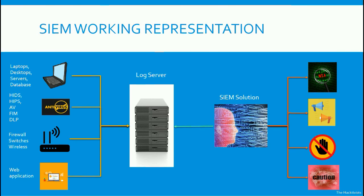The SIEM software reads through all the logs in the log server to give a particular output. You can query and search for a particular event or a sequence of events. You can create alerts using correlation rules or signatures to identify attack patterns. Some solutions also provide IPS — Intrusion Prevention System — to prevent certain attacks. Additionally, the SIEM gives a caution or notification if there is a change in behavior or network analysis — not only alerts for specific attacks but also a caution if something suspicious is going on based on all the collected log information.